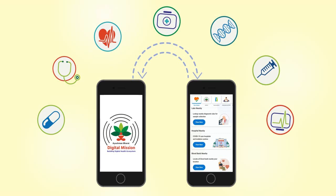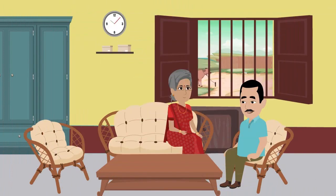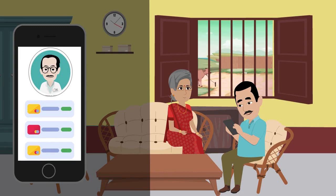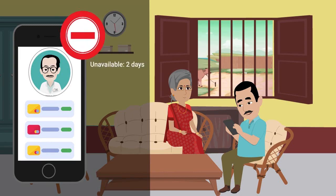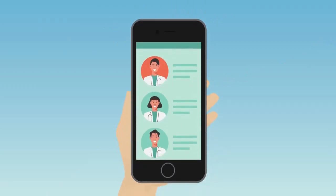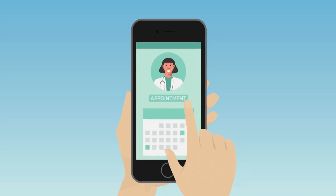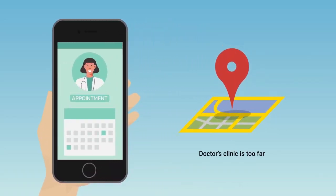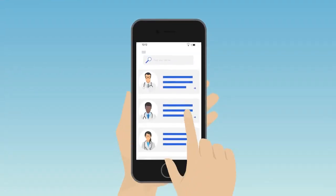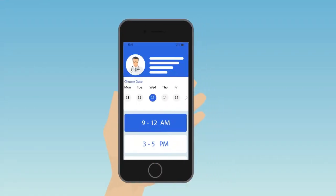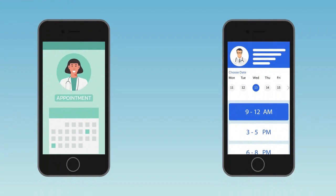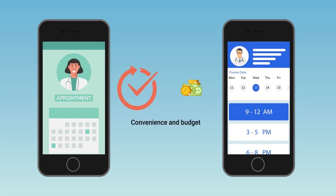Rahul wants to get his mother's painful knee checked, but the specialized doctor he regularly visits is unavailable for another two days. He browses commonly used health apps to book an appointment at his convenience and avoid long waiting times. He finds another specialized and verified doctor through one app, but the clinic is too far away. He then explores another app that shows immediate availability, but the consultation fee is too high. With two different apps, Rahul experiences two different situations and has to switch between them to find a verified doctor available at his convenience and budget.